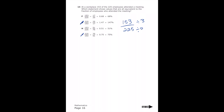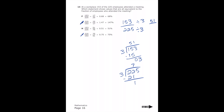Dividing 153 by 3: 3 goes in 5 times with a remainder of 3, then 3 goes into 3 one time, giving 51 on top. For the denominator, 225 divided by 3: 3 goes into 22 exactly seven times giving 21 with a remainder of 15, and 3 goes into 15 five times, so the denominator is 75. We now have 51 over 75.